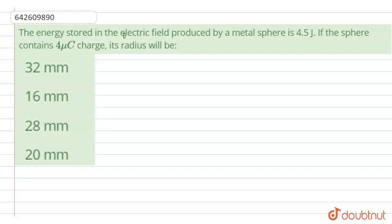Hello everyone, the question says that the energy stored in the electric field produced by a metal sphere is 4.5 Joules. If the sphere contains 4 microcoulomb charge, then the radius will be.